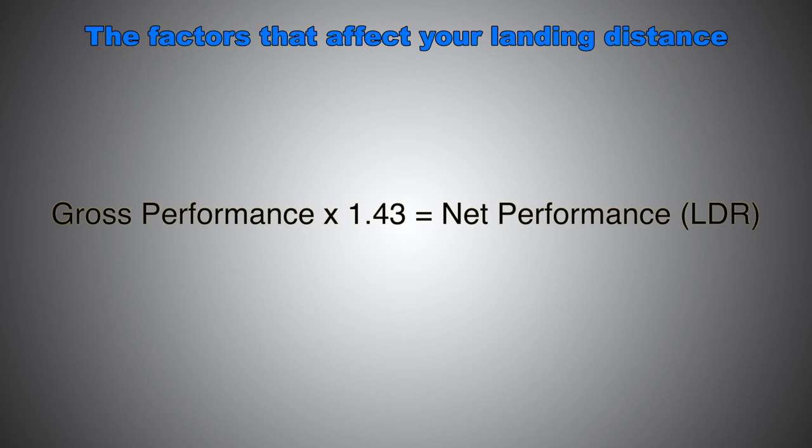So whatever you calculate off of your POH or aircraft flight manual, you get the gross performance landing distance. Then you multiply that by this factor, 1.43, and you get the net performance.